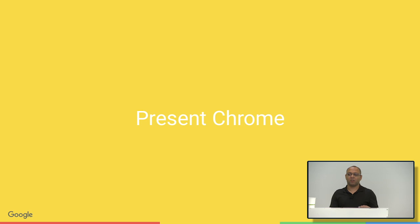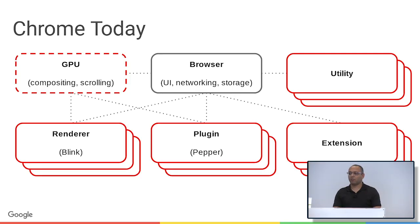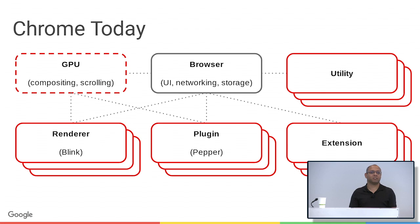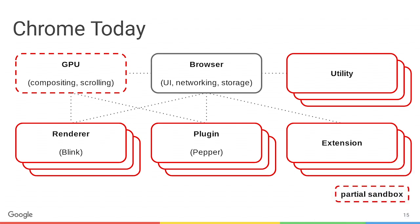So that's how we launched. How does Chrome look today? We've done a lot of improvements. You can see we added a bunch of new process types: there's a GPU process, which is partly sandboxed; the utility process; the extension process; plugins now have a red border, meaning they're sandboxed; and the render process, instead of running WebKit, now runs Blink, which we forked from WebKit.